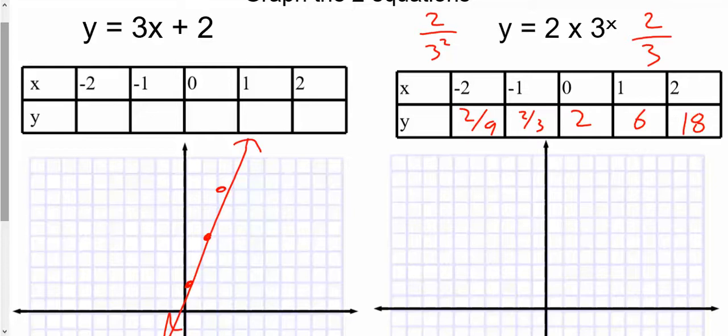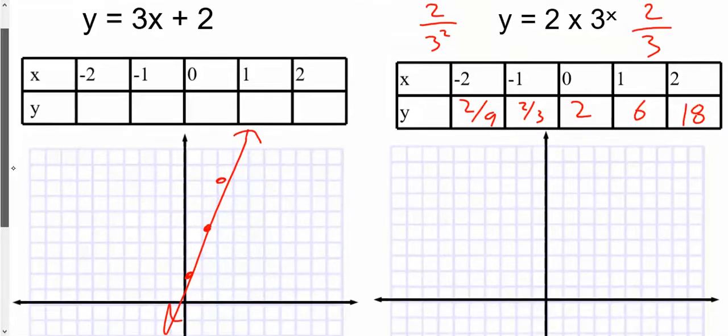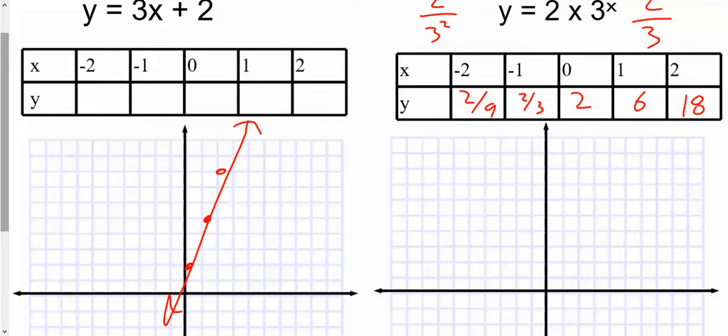The values as we go smaller are going to get really really close to 0. But we're never actually going to get to 0 because you're going to keep dividing by 3 as you get smaller and smaller. So you're never actually going to reach 0. So it's very important when you're graphing these that you don't cross the x-axis in this case unless there was a translation shifting it down, which could happen.